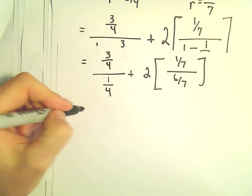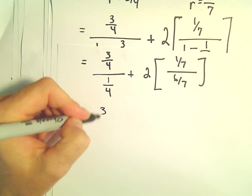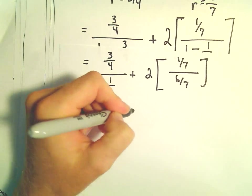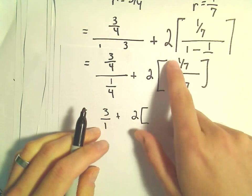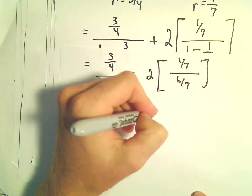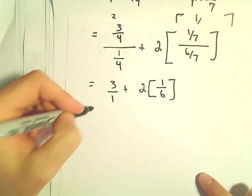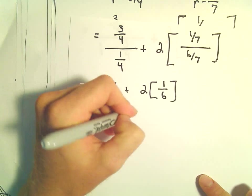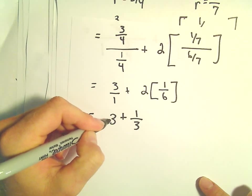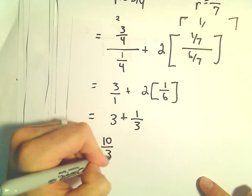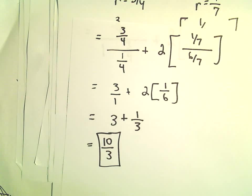So 3 fourths divided by 1 fourth just gives us 3 over 1. A seventh divided by 6 over 7 is going to give us a 6. So that's 3 plus 2 sixths or 1 third. So this will be 10 thirds, the value of the series.